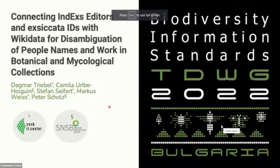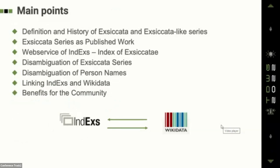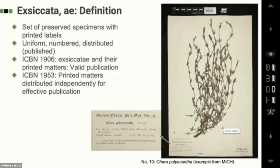Welcome to the talk on 'Connecting Index Editors and Exsiccatae IDs with Wikidata for Disambiguation of People Names and Work in Botanical and Mycological Collections.' The main points: definition and history of exsiccatae and exsiccatae-like series, exsiccatae series as published work, the web service Index Exsiccatae, disambiguation of exsiccatae series, disambiguation of person names, linking Index and Wikidata, and benefits for the community. Exsiccatae are sets of preserved specimens with printed labels that are uniform, numbered, and distributed.